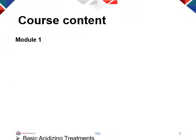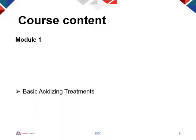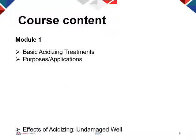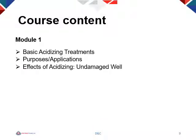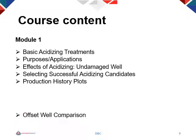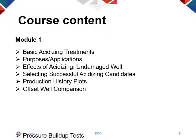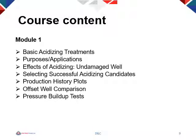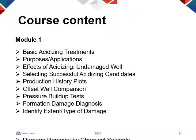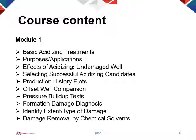The course content is broken down into five modules. In the first module we will discuss basic acidizing treatments, purposes and applications for these treatments, and effects of acidizing on undamaged wells. We will cover how to select successful acidizing candidates, the use of production history plots in design, using offset well data for comparison of results, pressure buildup tests and their uses, formation damage diagnosis, how to identify the extent and type of reservoir damage, and how to remove this damage by using chemical solvents.